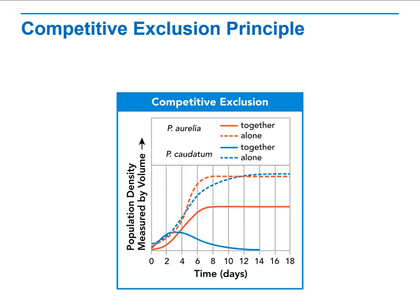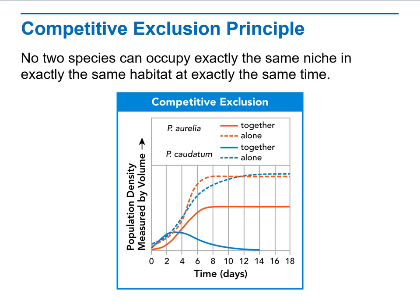When we talk about how animals survive with each other, we talk about competitive exclusion — how they compete with each other to occupy a specific niche or role. The competitive exclusion principle states that no two species can occupy exactly the same niche in exactly the same habitat at exactly the same time, so they must have a competitive relationship between them.